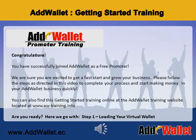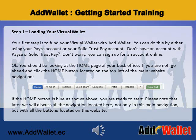Here we go with Step 1: Loading Your Virtual Wallet. Your first step is to fund your virtual wallet with AdWallet. You can do this by either using your PESA account or your SolidTrust Pay account. Don't have an account with PESA or SolidTrust Pay? Don't worry, you can sign up for an account online.